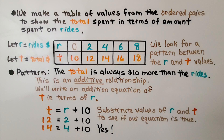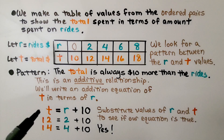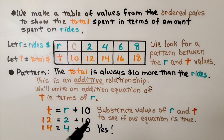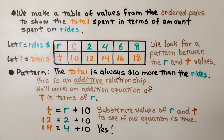We can substitute values of r and t to see if our equation is true. We try 12 and 2: 12 is equal to 2 plus 10 — yes. And 14 is equal to 4 plus 10 — yes. We know we wrote our equation correctly.